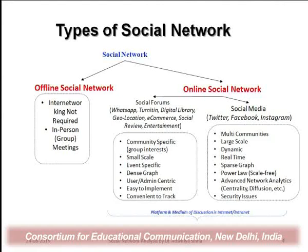Advanced network analytics for online social networks includes centrality features — which node is central when multiple communities with huge numbers of people are involved. We may also analyze diffusion parameters: how far information propagated by a particular community has reached in practice. And since there are multiple communities and multiple sources of data generation, security issues become an important concern.